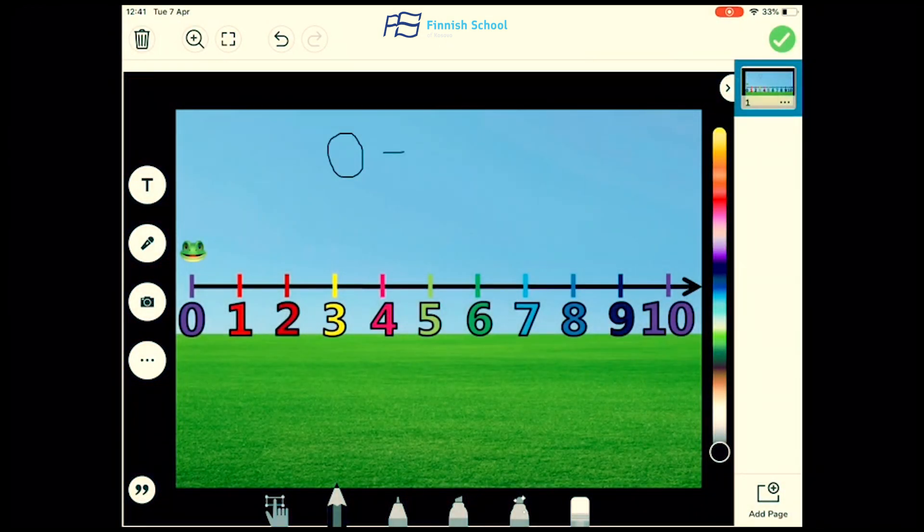An addition problem is 0 plus 1. We always start with the first number that we see, and that number is 0. So to do this, Froggy is going to start at 0 and have one big jump to number 1. As we see, Froggy landed on number 1, and 0 plus 1 equals 1.